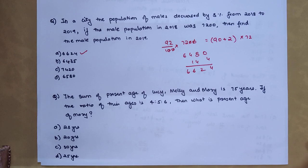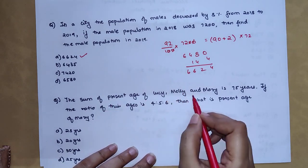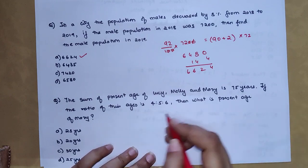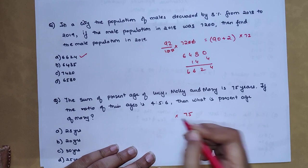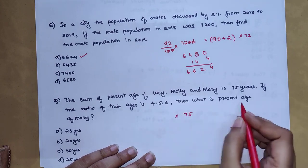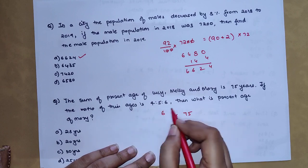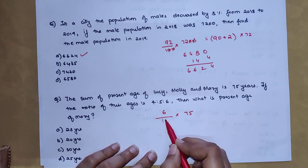The next question here is: The sum of present age of Lucy, Molly, and Mary is 75 years. The ratio is this, then what is the present age of Mary? So now total is 75, and what is the number which is representing Mary? It's 6 in the ratio. Then you will divide it by the total of all these ratios which is 15.